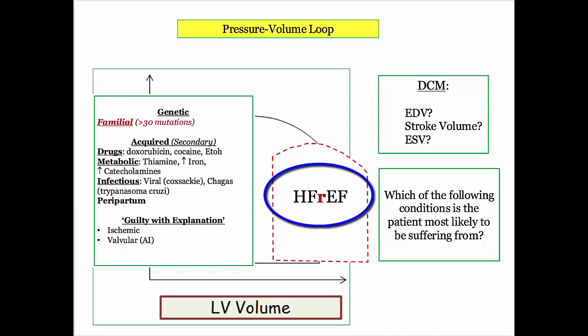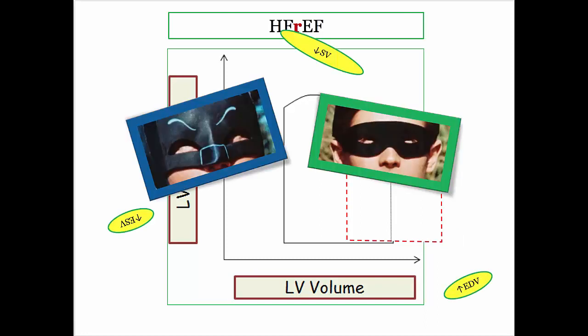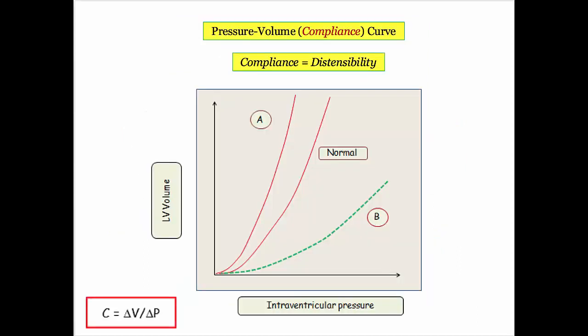Be prepared to see this graphic and translate it into the myriad causes of heart failure with reduced ejection fraction. We're focused on dilated cardiomyopathy, but for all intents and purposes this graphic refers to any and all causes of heart failure with reduced EF — it doesn't discriminate. Here are your labels; you should be able to affix them to this graphic with your eyes closed. Let's move on to the pressure volume curve.